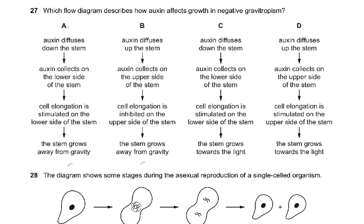So it is either this or this — we are not going to talk about the light story, so C and D are wrong. Now we narrow down to A and B. Auxin diffuses down the stem, auxin collects on the lower side of the stem, cell elongation is stimulated on the lower side of the stem.